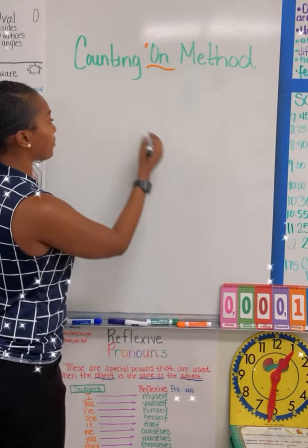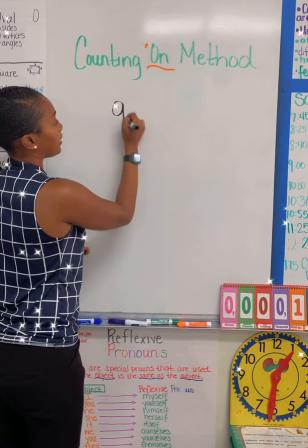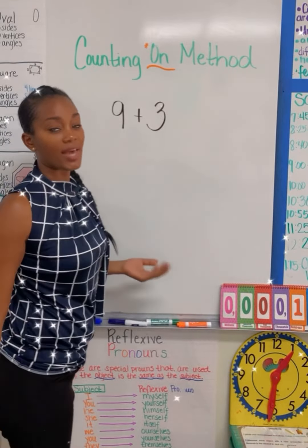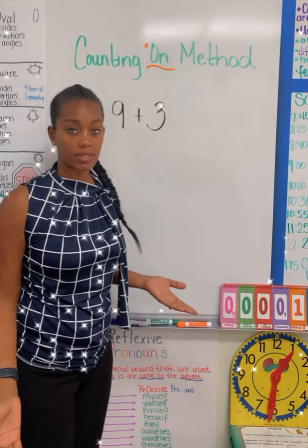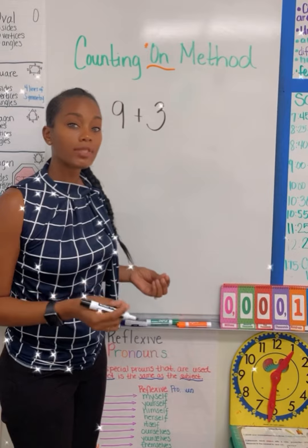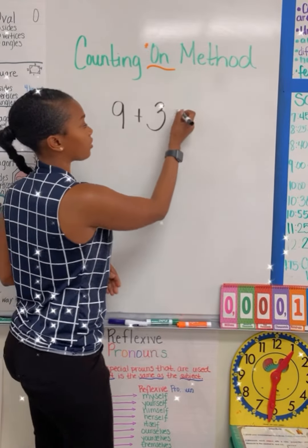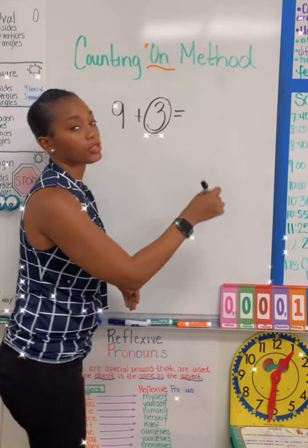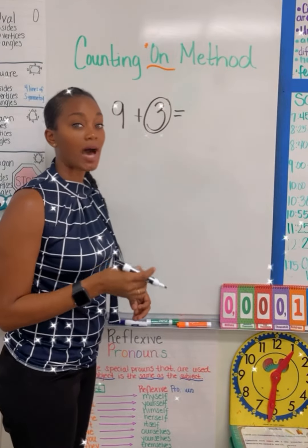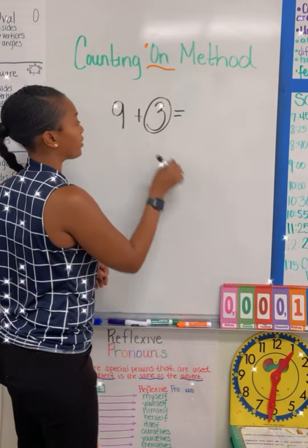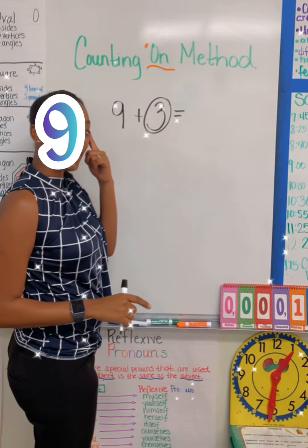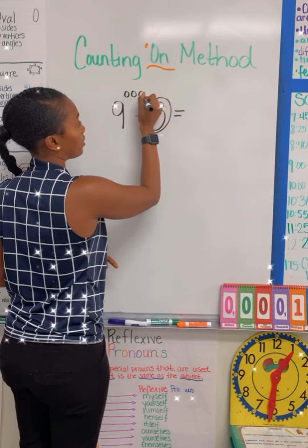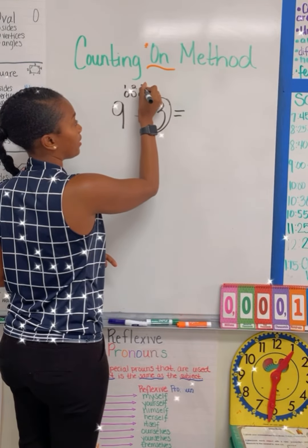Say I have the number 9 plus 3, and you don't know how to add 9 plus 3. What I'm going to do is circle the number 3. I'm going to use that number as my count on number. So I'm going to say 9 in my mind, and I'm going to put 1, 2, 3 counters.